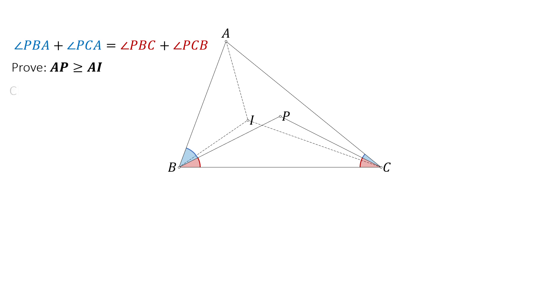We begin by proving that points B, C, P, and I are on the same circle. In triangle BCP, the sum of angle BPC, angle PBC and angle PCB equals 180 degrees.